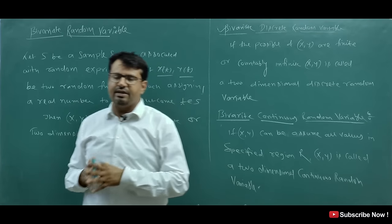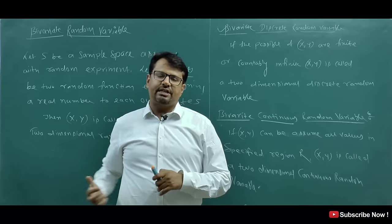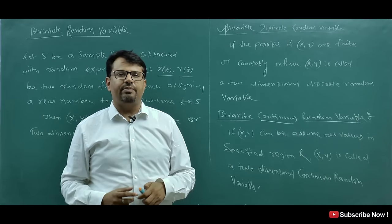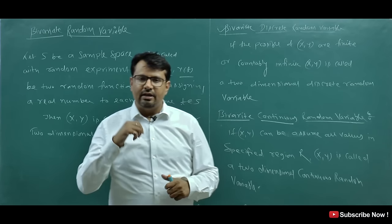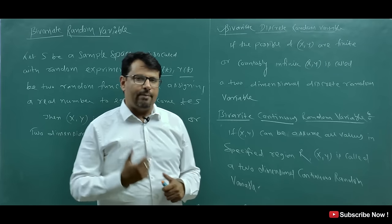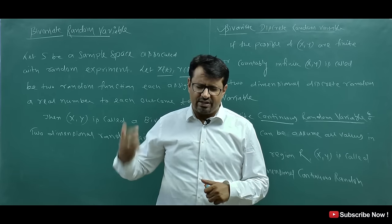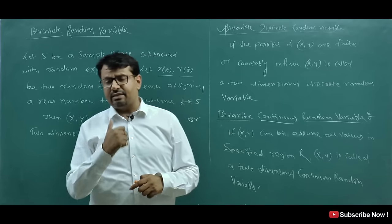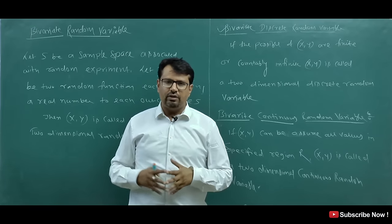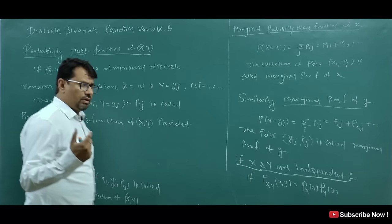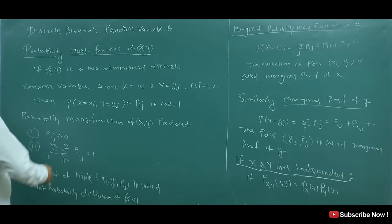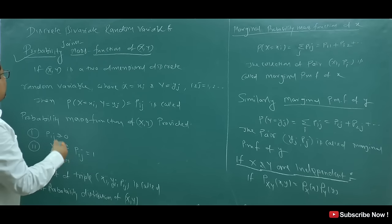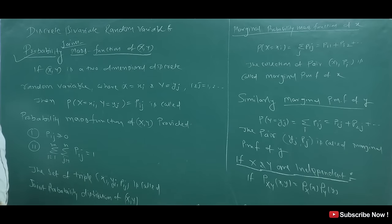So students, here are two types of bivariate random variables: one is continuous bivariate random variable and one is discrete bivariate random variable. In this class, I am going to tell you about the discrete bivariate random variable. The first concept is the probability mass function, or joint PMF — that is, joint probability mass function. Because it is a bivariate random variable, the joint word will come here.